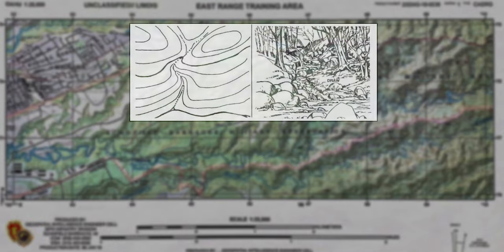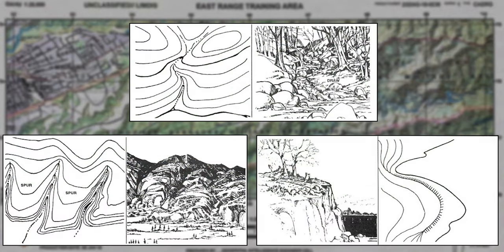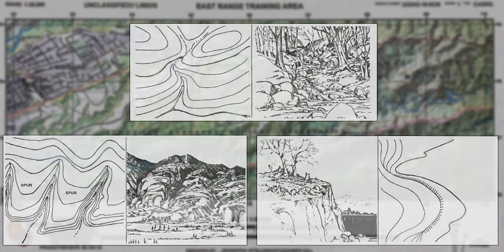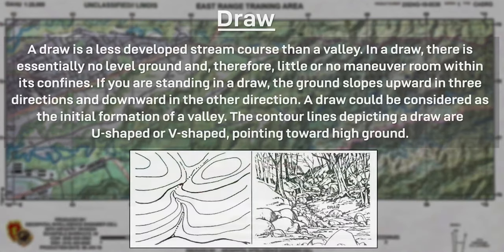There are three minor terrain features: draws, spurs, and cliffs. They are represented on maps in unique ways. A draw is a stream course less developed than a valley — there is essentially no level ground and little or no maneuver room within its confines. In a draw the ground slopes upward in three directions and downward in one. A draw could be considered the initial formation of a valley, and contour lines depicting a draw are U-shaped or V-shaped pointing toward higher ground.